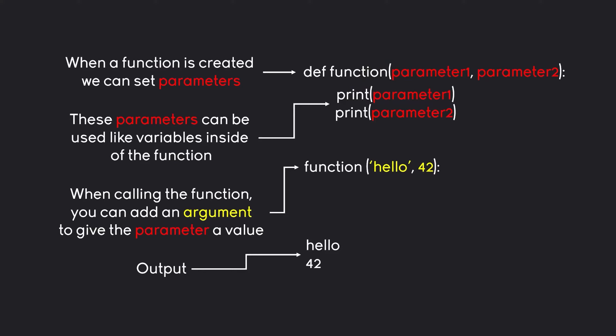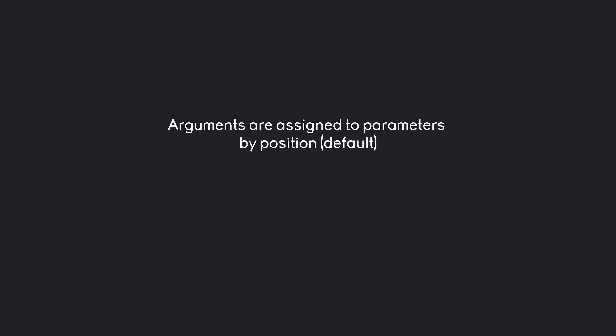The basic thing you have to take away from this is that a parameter is basically a slot for an argument. We are only using arguments when we are calling the function, and the parameters are the slots that we add the arguments to. How does this ordering happen? By default, arguments are being assigned to parameters via their position, meaning the first argument goes to the first parameter, the second to the second, and so on.